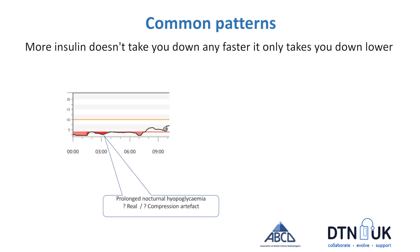On the left side here, you can see an example of someone having a prolonged overnight hypoglycemia. It's important to remember that sometimes these long overnight hypoglycemic episodes might occur if you're sleeping on the sensor. Sometimes it becomes difficult to differentiate between what we call sensor compression artifact and what is real hypoglycemia. You might want to think back: did I take too much background insulin? Did I do a lot of exercise the previous day? Did I drink any alcohol? In which case, it's more likely to be real hypoglycemia.